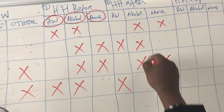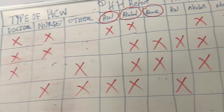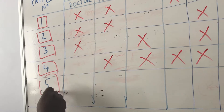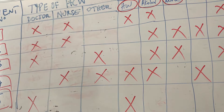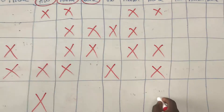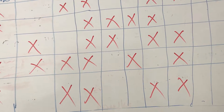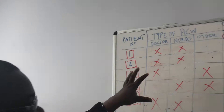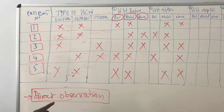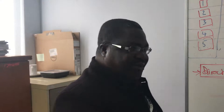For the last patient, the doctor came and used soap and water before contact, but did not take any action after. The nurse was also there — the nurse used alcohol hand rub before and after patient contact. This is the survey. In the next video, I'm going to show you how to do the calculation to get the adherence rate.